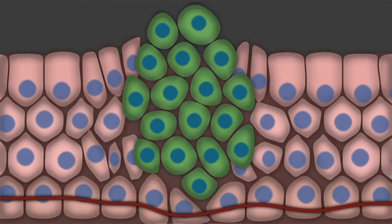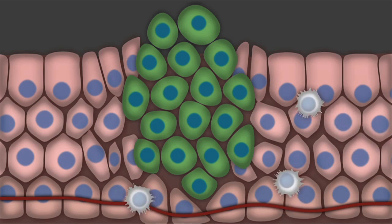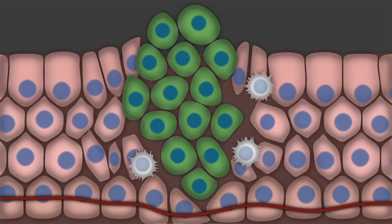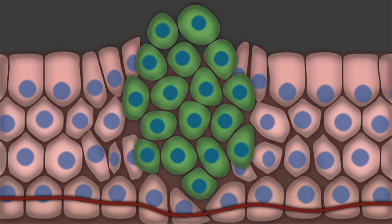When a cancer starts, the body's immune system will often recognize the cancer cells as abnormal and attack them. This may kill some cancer cells, but it can't get rid of all of them. To have the energy to keep growing, the cancer needs a blood supply. To get that supply, the cancer sends out chemical signals that draw blood vessels to it.